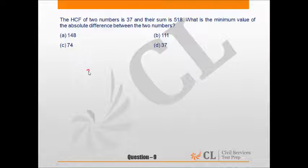Let us suppose the numbers are 37x and 37y where x and y are coprime. Because there should not be any common factor between x and y. And after that only the HCF of 37x and 37y would be 37. So x and y should be coprime.